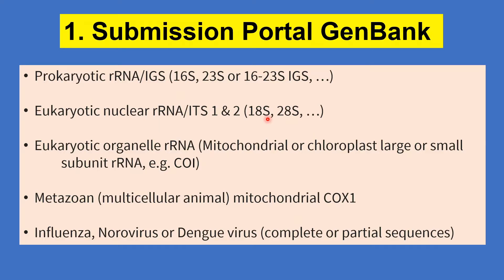You can also submit the small subunit 18S and the large subunit 28S, as well as the whole region from 18S ITS through to 28S. In addition, you can submit data from ribosomal RNA of organelles such as mitochondria and chloroplast — for example, cytochrome oxidase subunit 1 data, and also metazoan mitochondrial cytochrome oxidase subunit 1 sequence data.